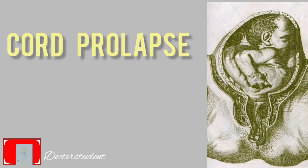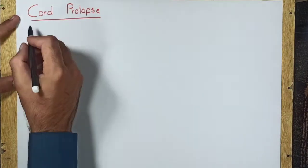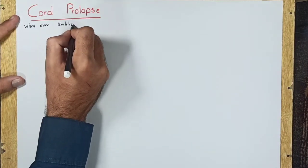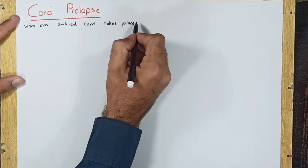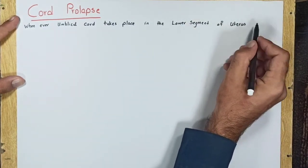Today we are going to talk about cord prolapse. Definition: Whenever an umbilical cord takes place in the lower segment of uterus, it is called cord prolapse.